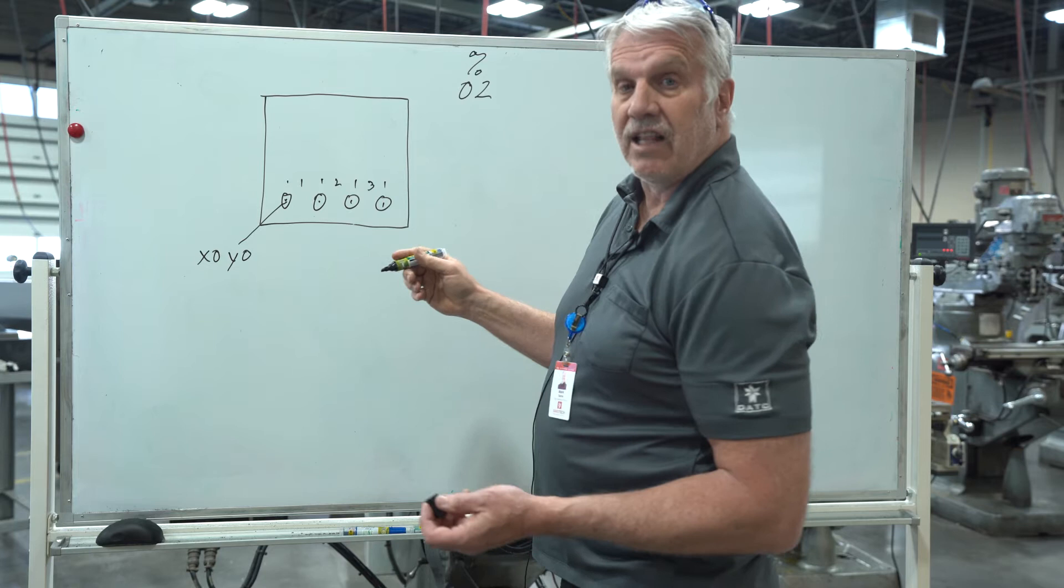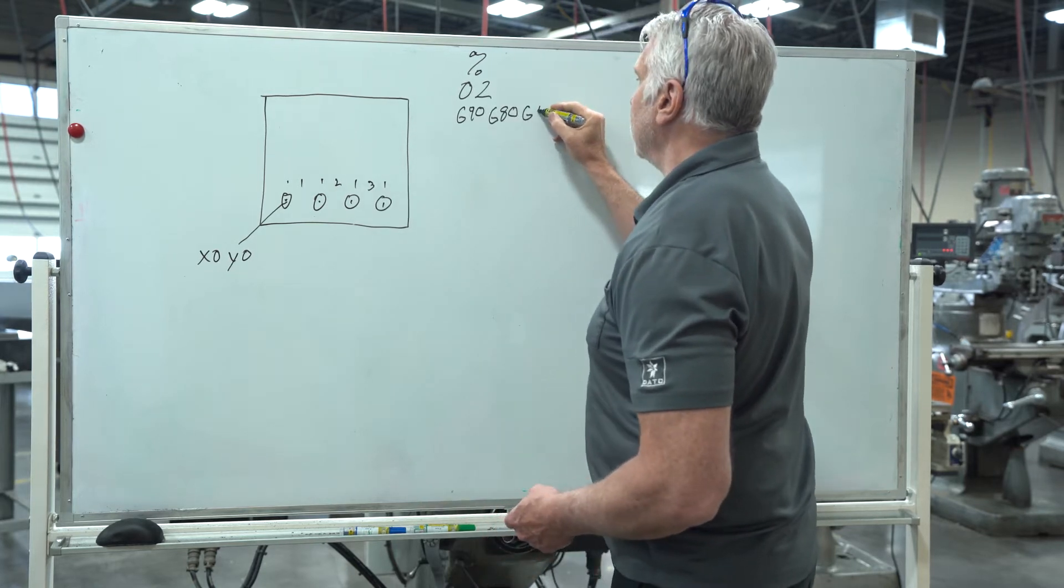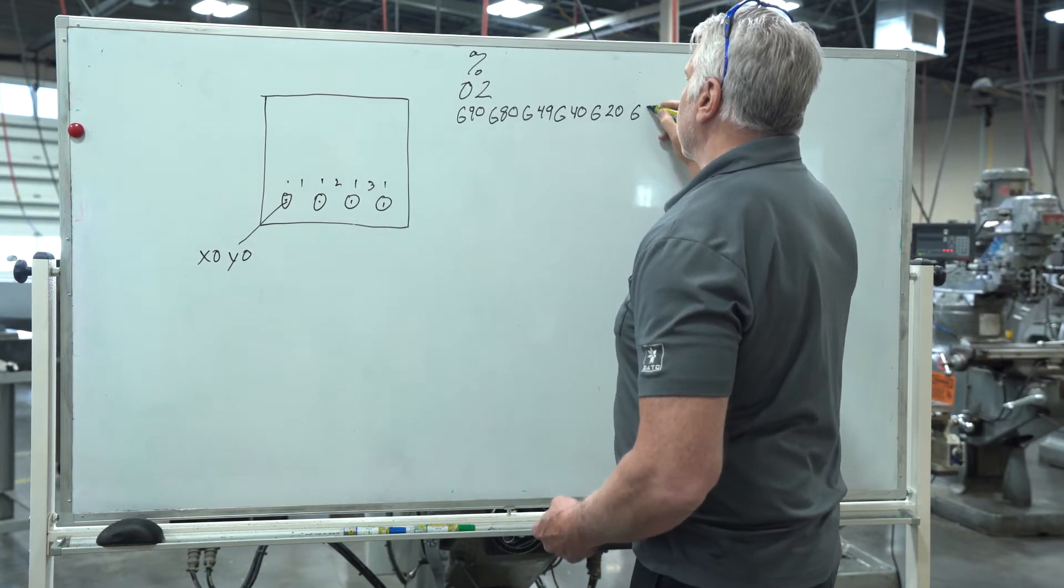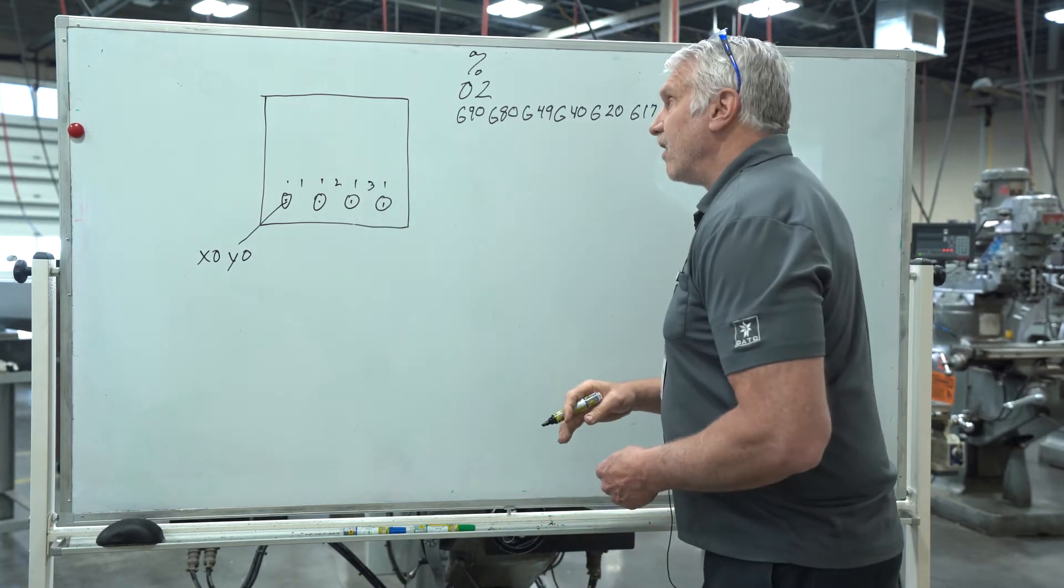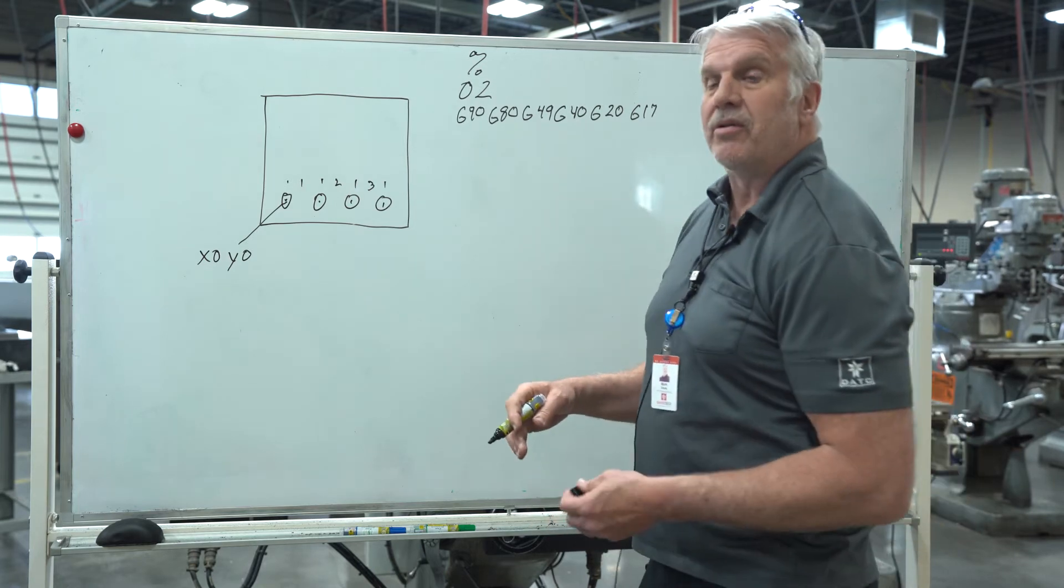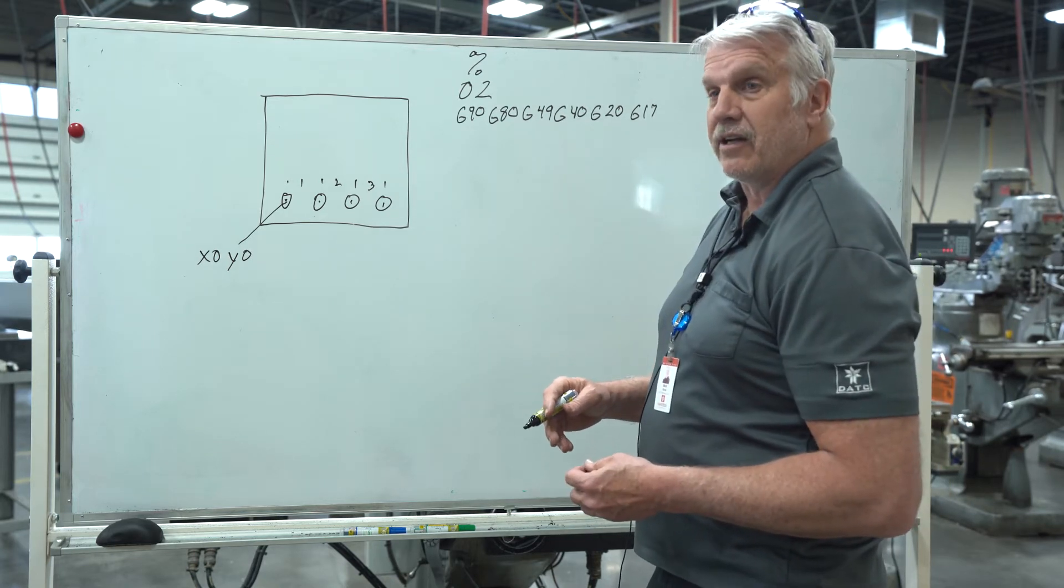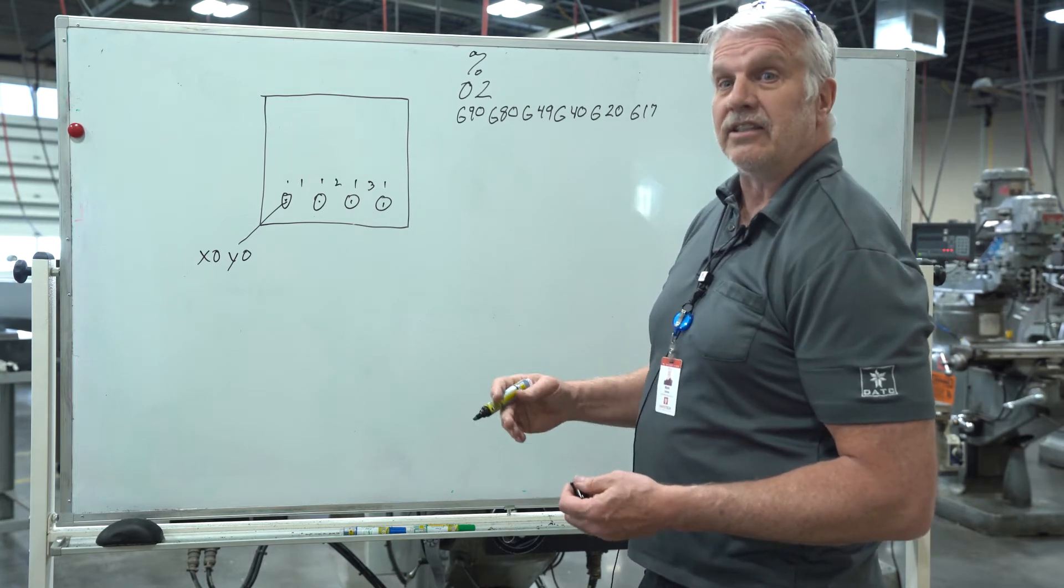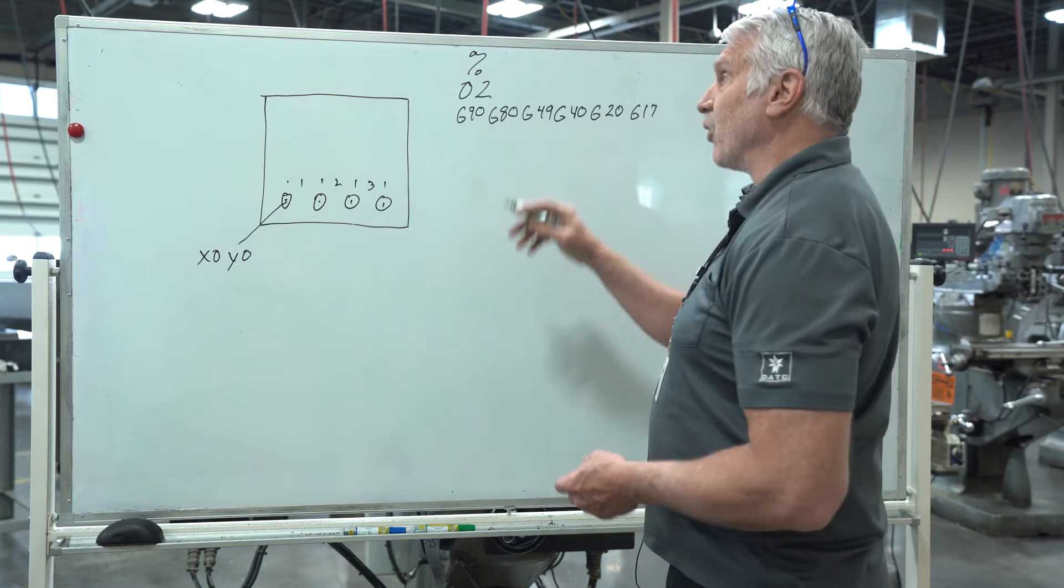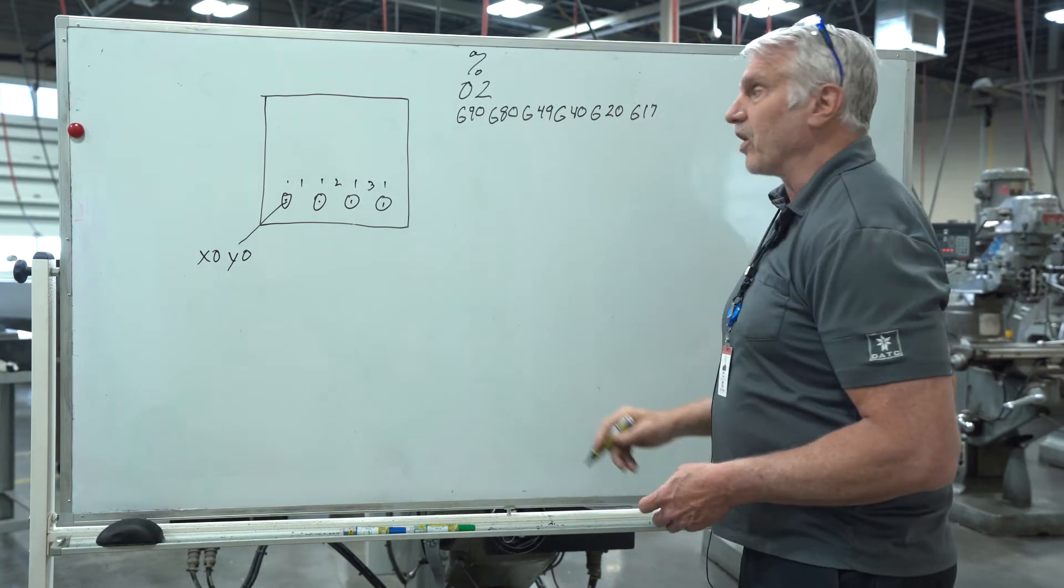Then the next thing we want to do is put in our safety line. We always want to put in our safety line which is the G90, G80, G49, G40, G20, and G17. All those things mean we're making sure that we don't want to run something that maybe a previous person had run and had cutter comp in there or was in incremental mode. Just like anything, you want to make sure before you go out the door in the morning you're completely dressed. This is making sure that everything's where it needs to be. We're in absolute mode, CAN cycle cancel, tool height offset cancel, cutter comp cancel, we're in the inch mode, and we're working in the XY plane.